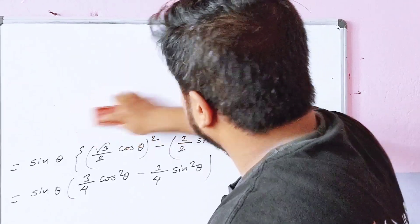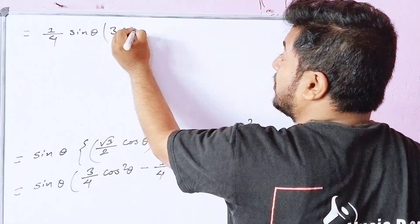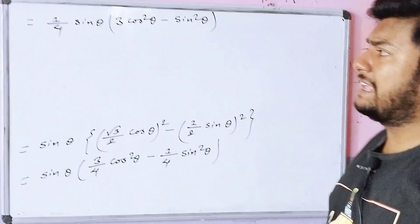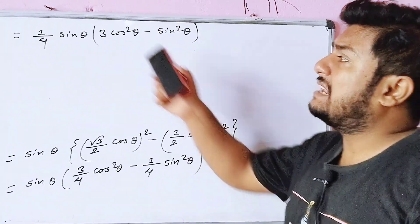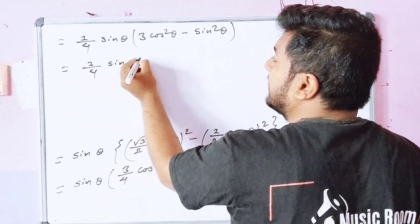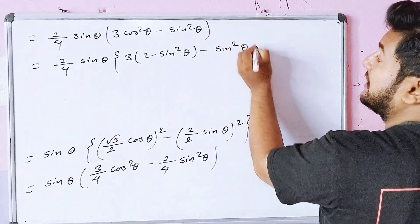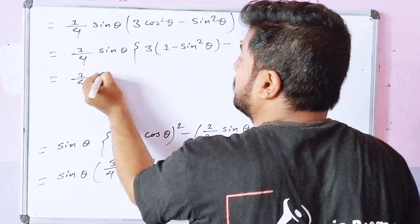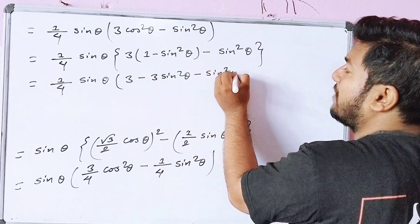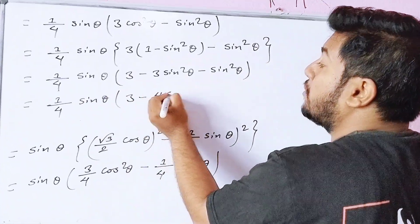So we have 1 by 4 sin theta into 3 cos squared theta minus sin squared theta. Now, the expression becomes 1 by 4 sin theta into 3 cos 2 theta. I will say that cos 2 theta is equal to 1 minus sin squared theta. So the expression is 1 by 4 sin theta into 3 minus sin squared theta, which gives 1 by 4 sin theta into 3 minus 4 sin squared theta.